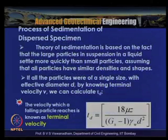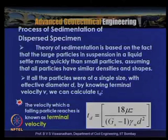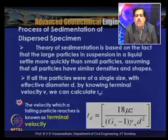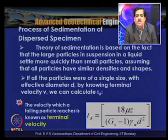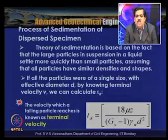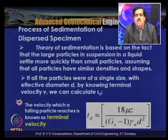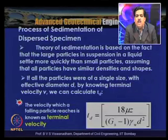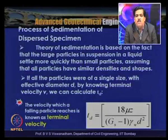The theory of sedimentation is based on the fact that large particles in suspension settle more quickly than small ones because v is proportional to d², assuming all particles have similar densities and shapes. If all particles were of single size with effective diameter d, the settling time Td is given by: Td = 18μz / [(Gs − 1)γw d²]. Therefore Td is inversely proportional to d², meaning larger particles take less time to settle while smaller particles take more time.